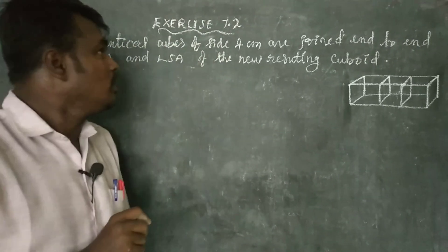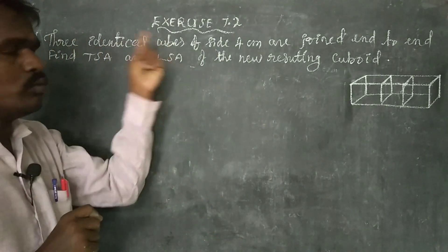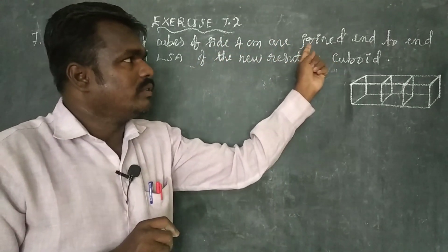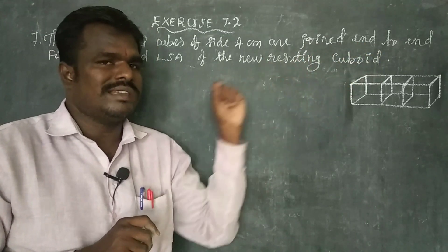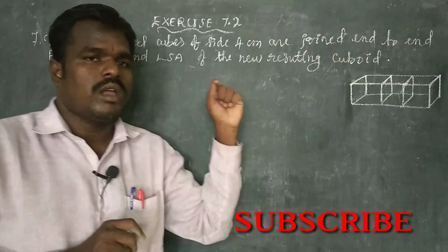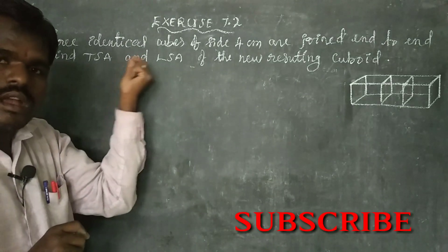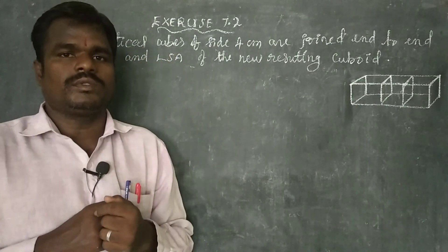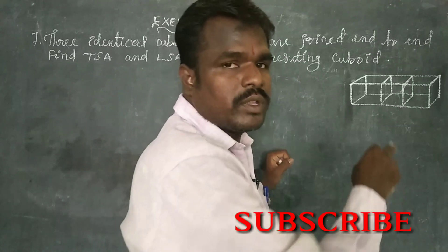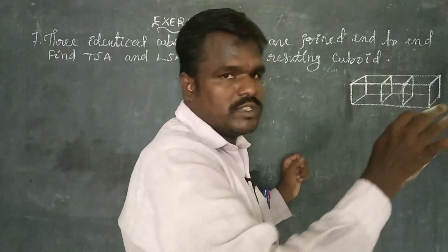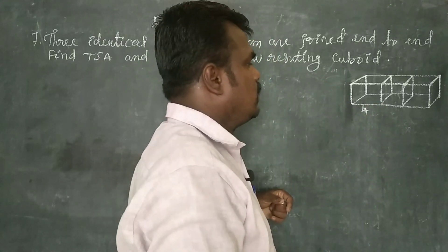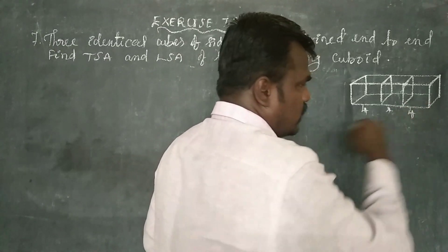In this question, three identical cubes of size 4 centimetres are joined end to end to form one new resulting cuboid. We need to find the TSA and LSA of the new cuboid. Here is the diagram: three cubes joined end to end, each side measuring 4 centimetres.